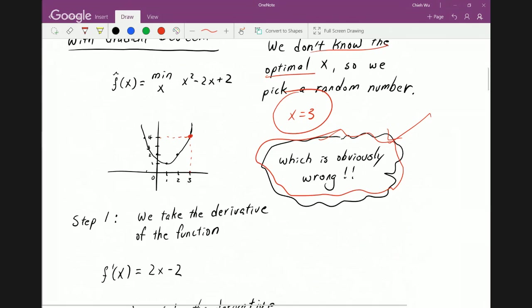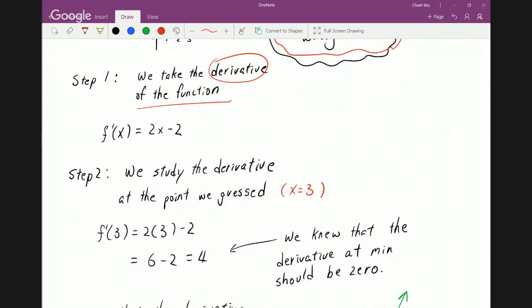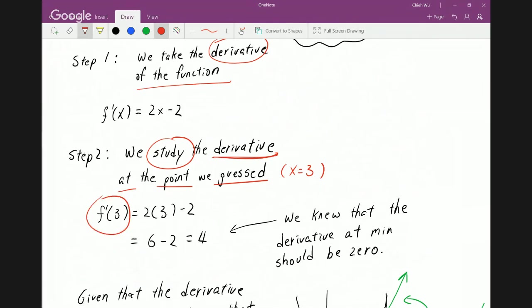Now, the first thing we do is we take the derivative of the function the same way over here. That's the derivative. And then we study the derivative at the point we guessed. So the guess was 3, right? So we study the derivative at that point. Well, if you plug 3 into the function, we'll get a 4 out. 6 minus 2 equals 4. So we know that the derivative at that point, we know the derivative at the minimum should be 0.